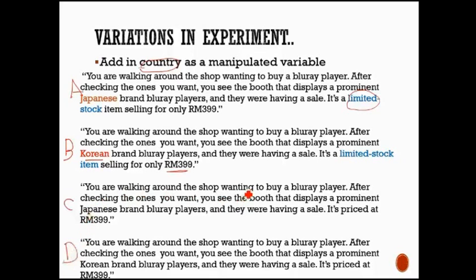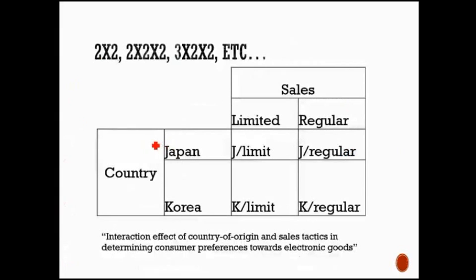But then as is the case when you have two variables of country and sales tactics, you need C and D. So in this one, so we have Japanese limited stock, we have also we need to have a version that says it's Japanese regular price at 3.99. We have Korean limited stock, and so we need Korean regular 3.99.